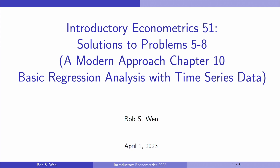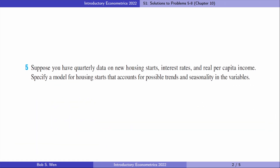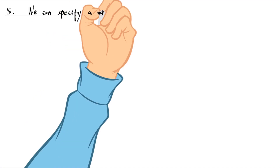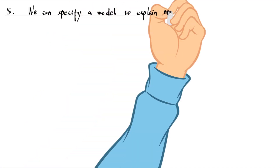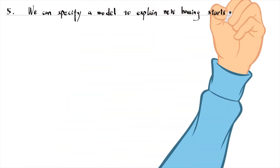Hi, I'm Bob. Let's solve the last four problems for chapter 10 today. For problem 5, we can specify a model to explain new housing starts in terms of interest rates and per capita income.